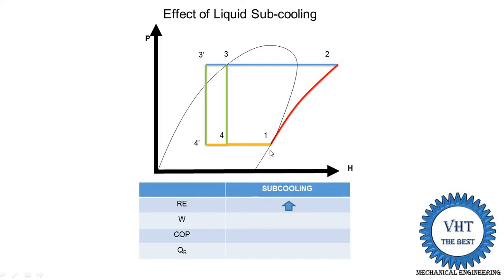The second point is work done. There is no change in the work done, which is H2 minus H1. In the simple case and when we install subcooling, it is the same — no change in work done. What is the change in COP? The COP of the system is increased because its definition is refrigerating effect divided by work done. Since refrigerating effect is increased and work done is the same, the COP of the system is increased.